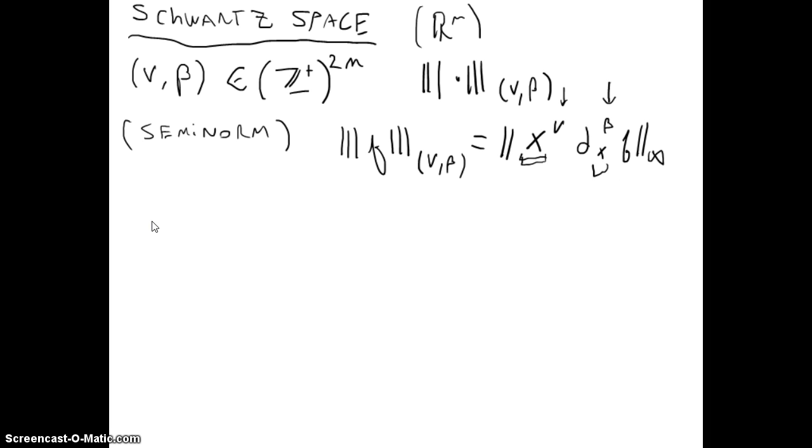Knowing this, now we can define the Schwarz space. We call it S(R^n), which will be the space of C^∞ functions that decay at infinity. Let's define it as f in C^∞(R^n).